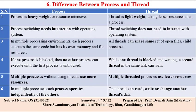Point 6 is the difference between process and thread, which should be written in tabular format. First: a process is heavyweight and resource intensive, while a thread is lightweight and uses fewer resources. Second: process switching needs interaction with the operating system, while thread switching does not need to interact with the operating system.